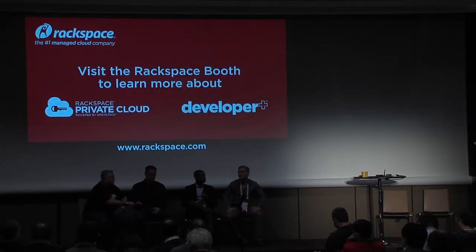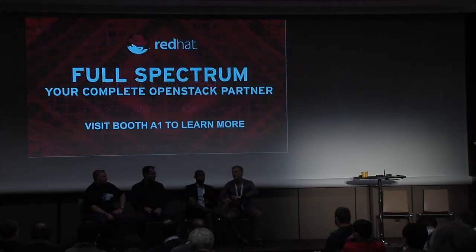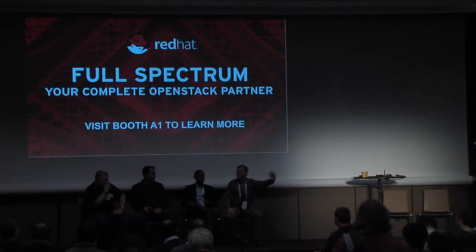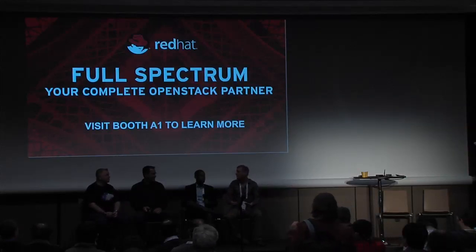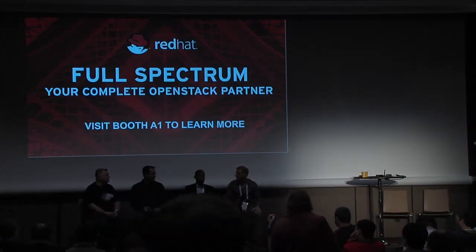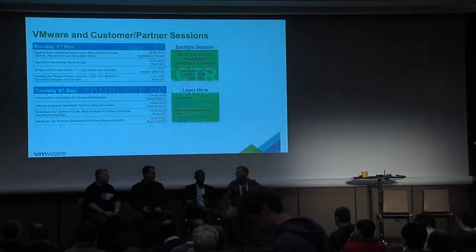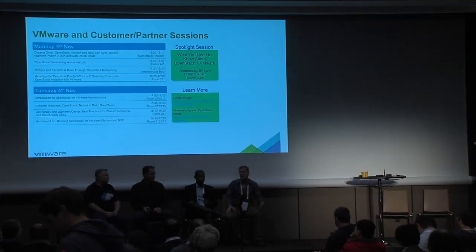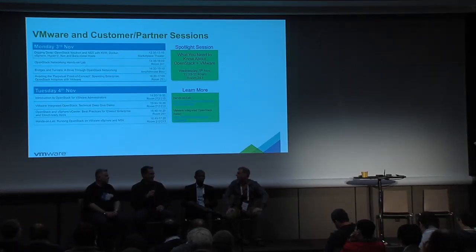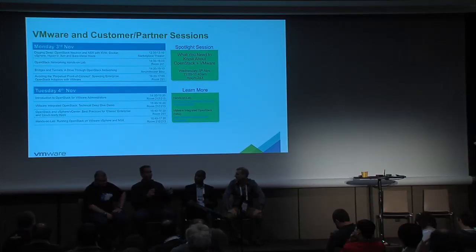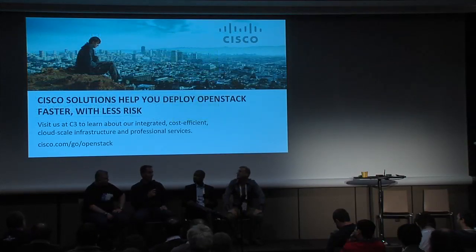One of my pet peeves is cloud bursting — the idea that you have your databases here but burst out to the public cloud for the spike. The problem is you're paying for bandwidth between public and private cloud. The few cents you're saving by putting extra compute on Amazon, you're getting hit by the amount of traffic that has to go between your database tiers and applications. I've also heard it referred to as 'spillover' — which sounds like an accident.